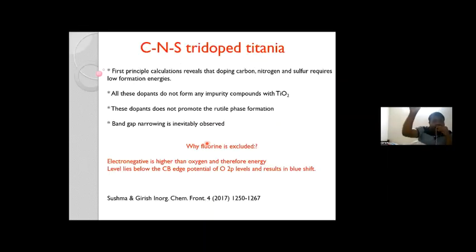Meeting all these, we come to the CNS tri-doped titania. The basis for choosing carbon, nitrogen, and sulfur is that computational calculations and experimental results suggest they have very low formation energies — a facile doping process with no impurity phases. If you are doping into anatase TiO2, which is widely regarded as a photocatalyst, it will never facilitate any rutile phase transformation, and band gap narrowing is inevitably observed. This is an article we published in Inorganic Chemistry Frontiers on this system.